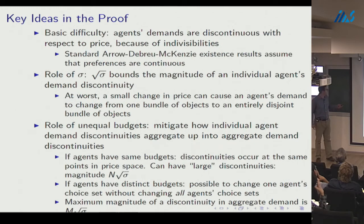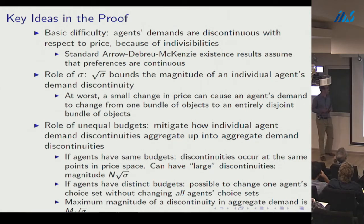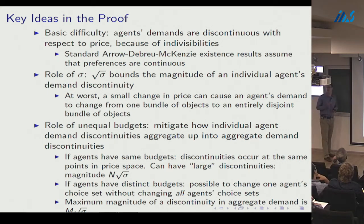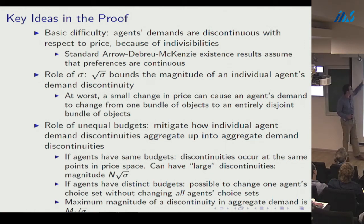I want to spend two slides on the key ideas in the proof. The basic difficulty relative to standard existence results is that agent demands are discontinuous with respect to price because of indivisibilities — a small price change can cause a big demand change since consumption is in zeros and ones. The sigma parameter characterizes how large an individual agent's demand discontinuity can be: if I demand bundles of at most 5 courses, the worst-case discontinuity is switching between two completely disjoint sets of 5 courses, giving Euclidean distance of root(10).